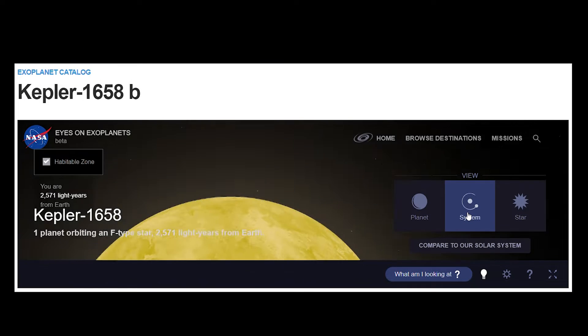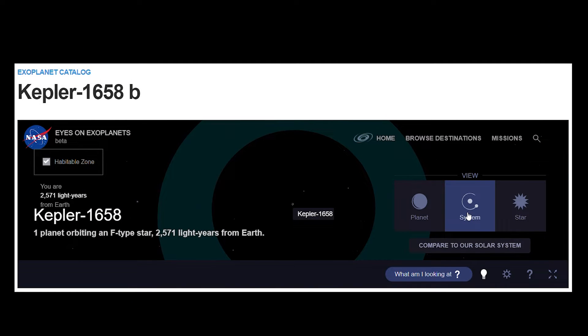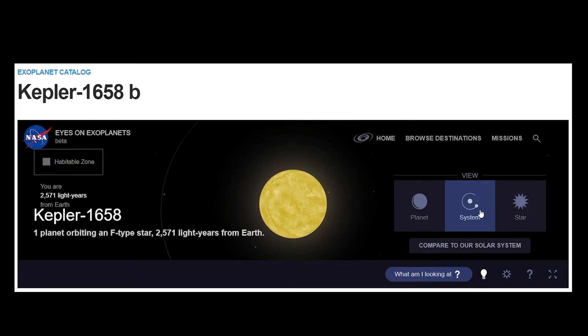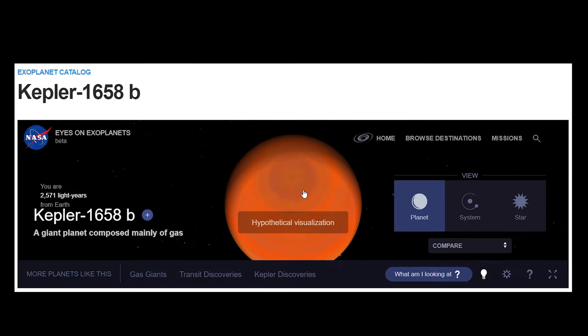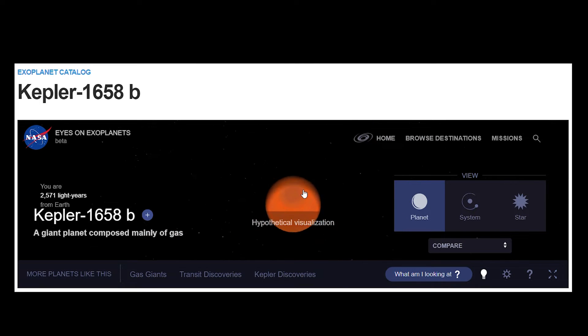Kepler-1658b is a dying exoplanet that orbits an F-type star. In a new paper released last week, a team of primarily American researchers expressed hope that the planet would provide insight into how planets die as their stars age.